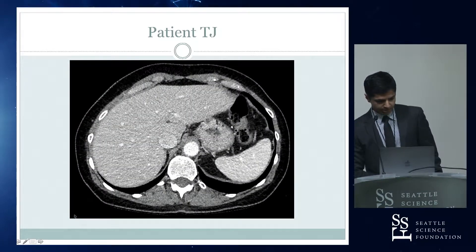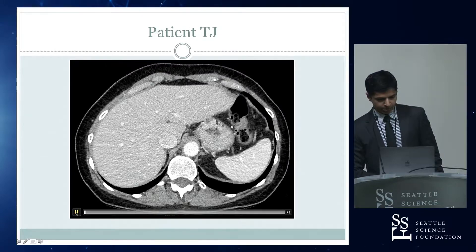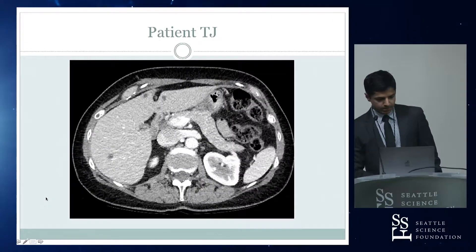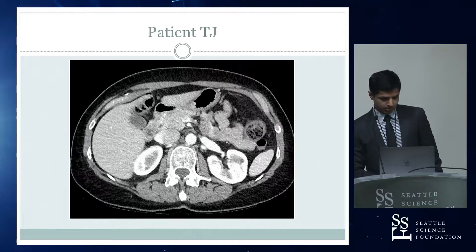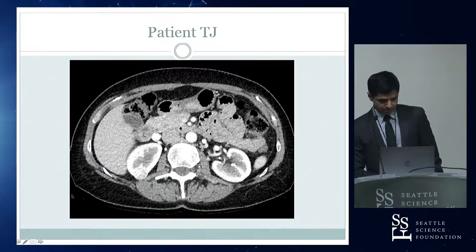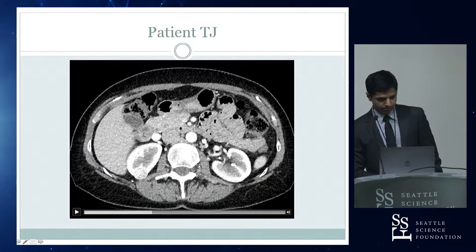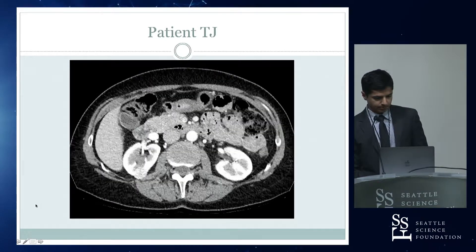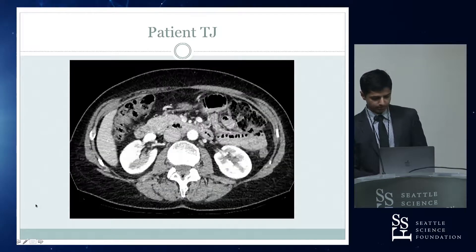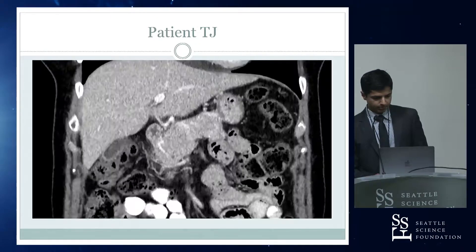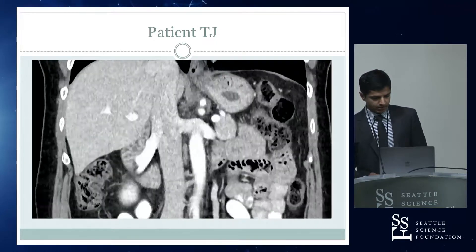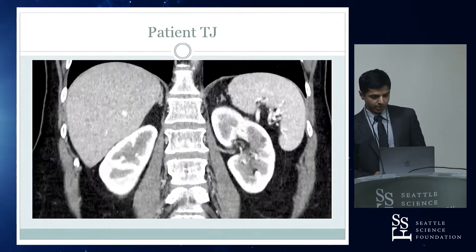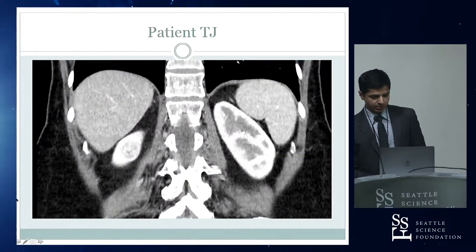So her CT scan is here. Axial scan going from cranial to caudal direction. You can see the right kidney come into view, and there's the mass there. You can see it posteriorly located, about 2.5 centimeters in size, partially exophytic — pretty amenable to a retroperitoneal approach. Again, the same CT scan but the coronal view. Going posterior now, you can see the right kidney come into view, and then the mass right there.